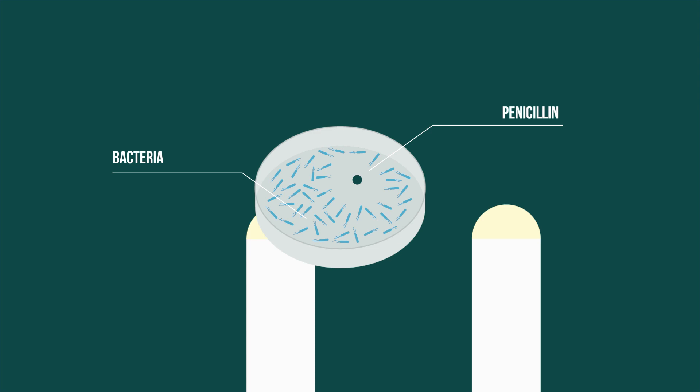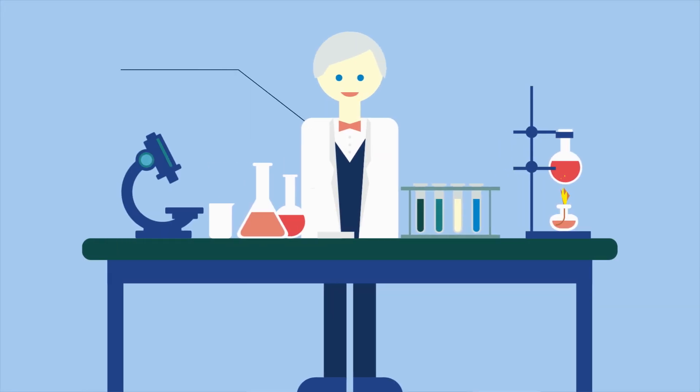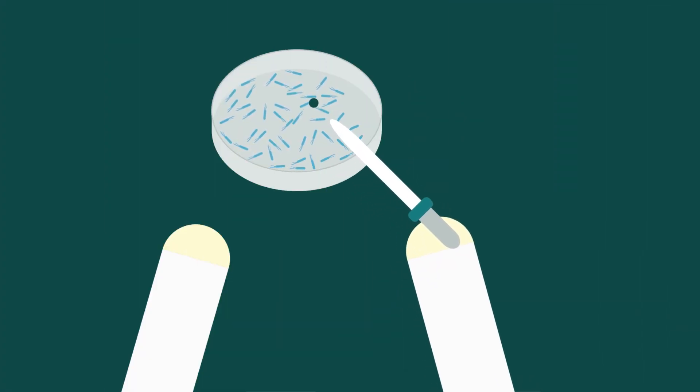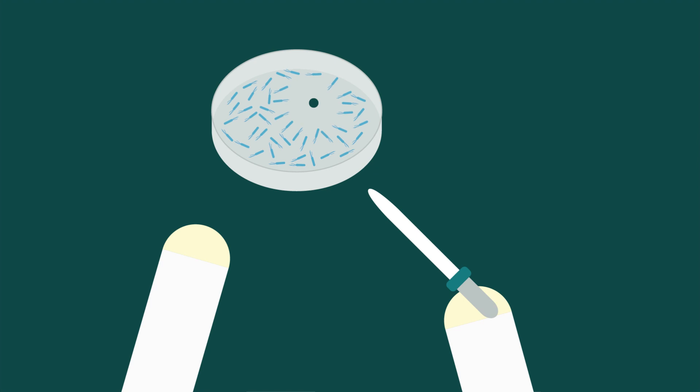Penicillin, the best-known antibiotic, was discovered in 1928 by Alexander Fleming. Thanks to this drug, far fewer people die of bacterial infections today than 100 years ago.